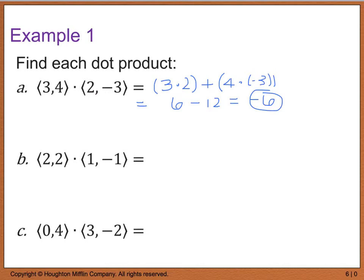Part b, I'm going to take 2 times 1, and I'm going to add that to 2 times a negative 1, which is going to give me 2 minus 2, or 0. And on part c, I have 0 times 3, plus 4 times a negative 2. So I end up with 0 minus 8, which is a negative 8.